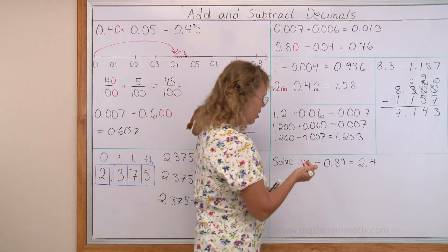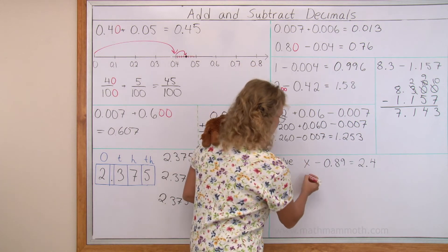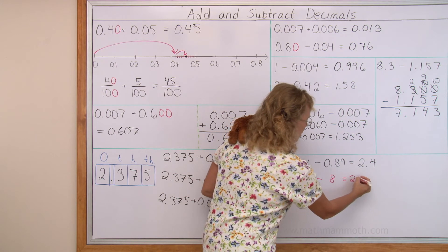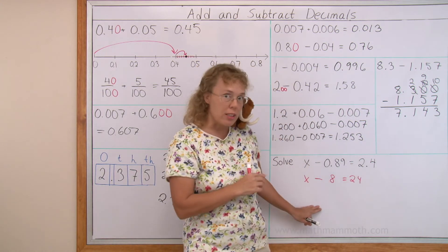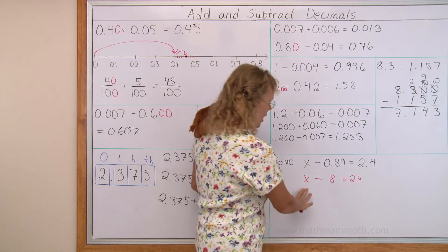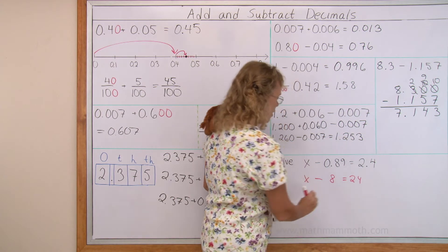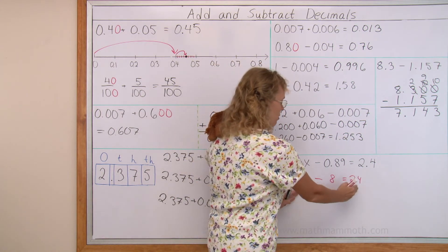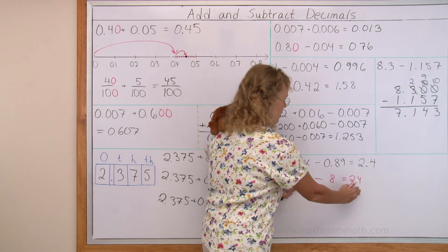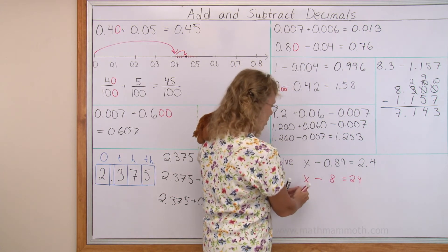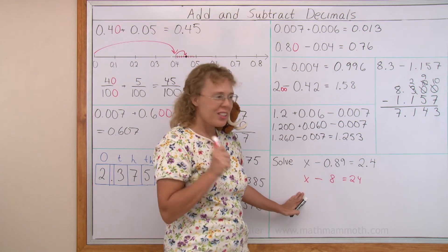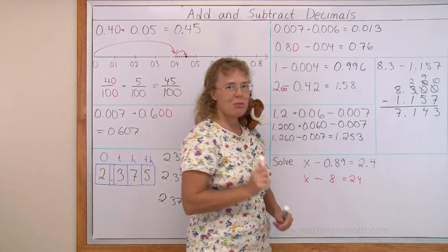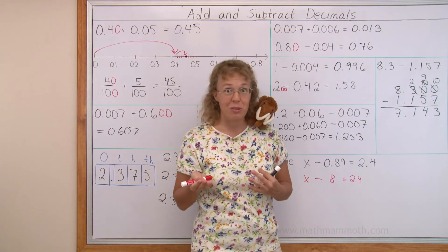Let's put 8 here and 24 here. Could you solve this equation? x minus 8 equals 24. Obviously x has to be a bigger number than 24, right? It should be 24 plus 8, 32 here. So the way to solve this equation is to add these two numbers. So that's what you will do with the original equation too. Take these two numbers and add them.